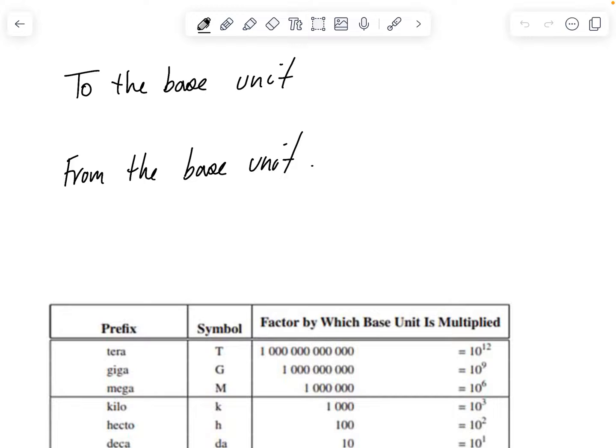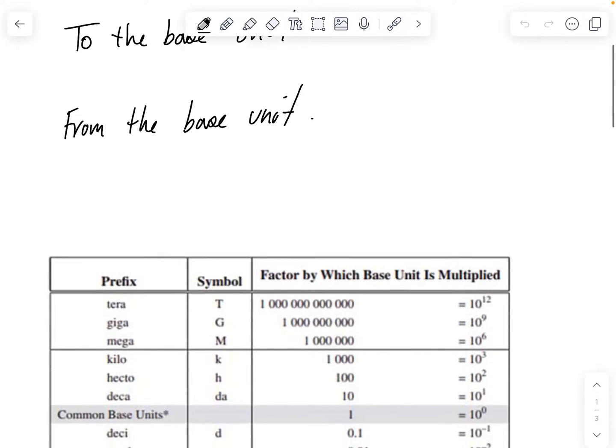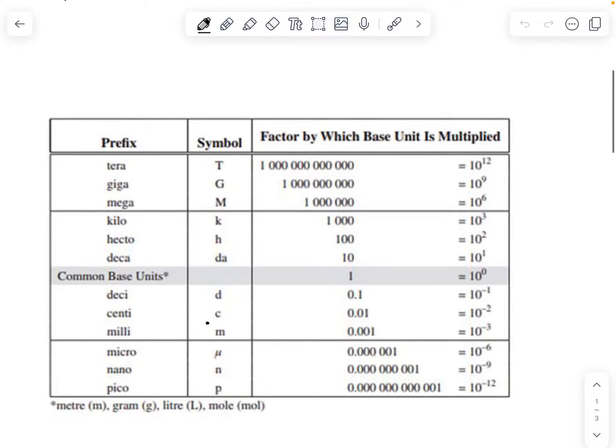And so this is kind of a unit conversion with metric SI prefixes and we're going to use this table. It's in your data booklet, I think it's on the second page on the inside of the cover. And this table has got several prefixes: tera, giga, mega, kilo, hecta, deca, desi, centi, milli, micro, nano, and pico.